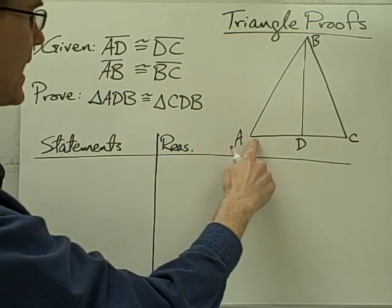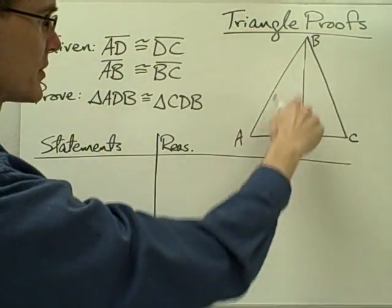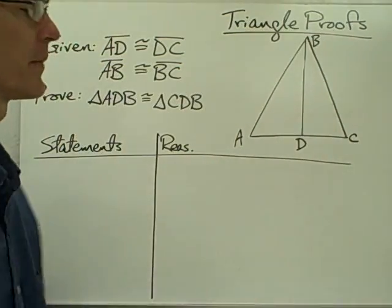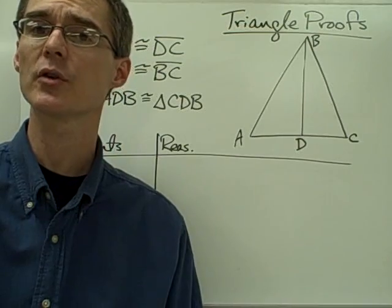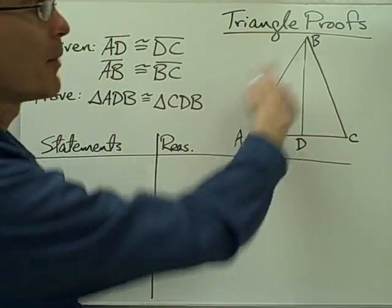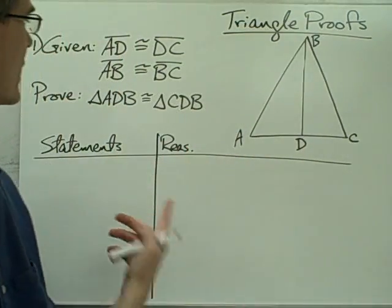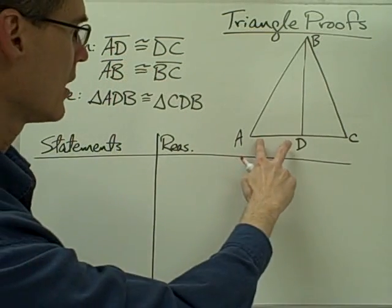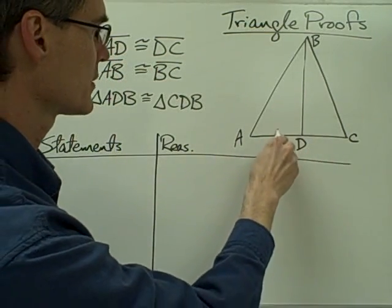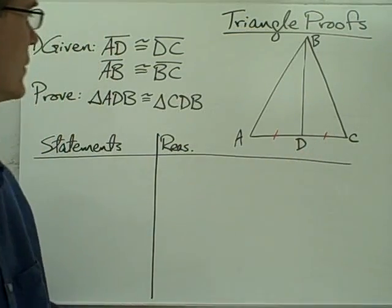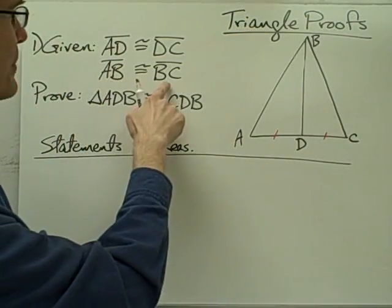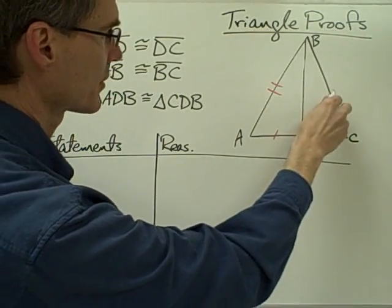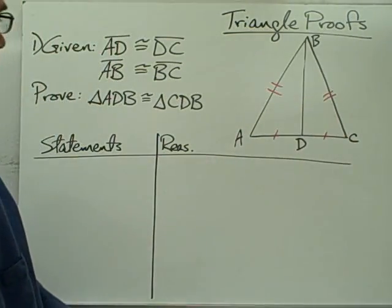We're trying to prove that triangle ADB, which is this triangle over here, is congruent to triangle CDB, this triangle over here. The first thing we do in our triangle congruence proofs is mark up our figure with the information that we're given. So segment AD and segment DC are congruent — let's mark AD and DC congruent. Segment AB and segment BC are also congruent, so let's mark those two segments congruent.